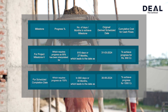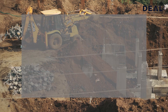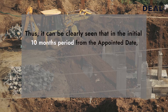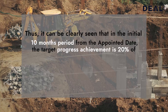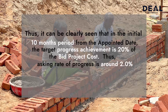For the Scheduled Completion Date, which requires 100% progress in 900 days or 30 months, the date is 30th June 2024 to achieve full progress of Rs. 1000 crore. It can be clearly seen that in the initial 10-month period from the appointed date, the target progress achievement is 20% of the bid budget cost. Thus the asking rate of progress is around 2% per month.